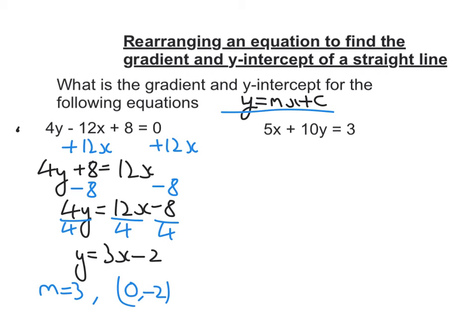Right, let's do the same for the second one. So I've got 5x plus 10y equals 3, so I'm going to have to move the 5x first. So let's take away 5x from both sides. I'm going to get 10y is equal to negative 5x plus 3.